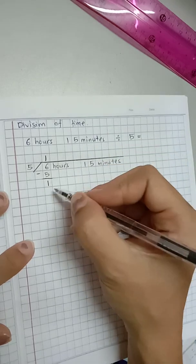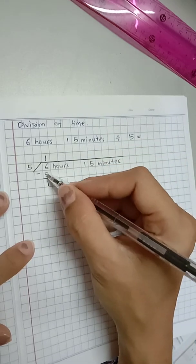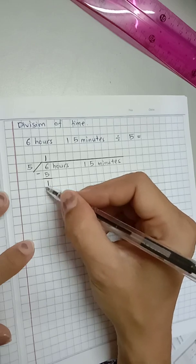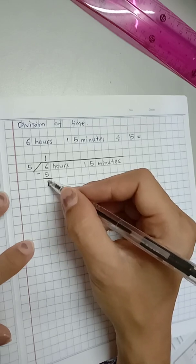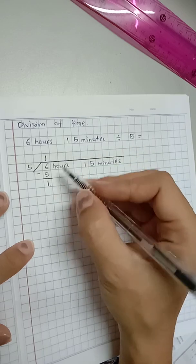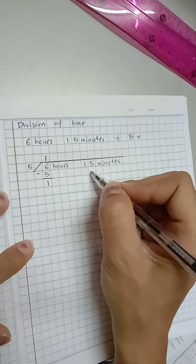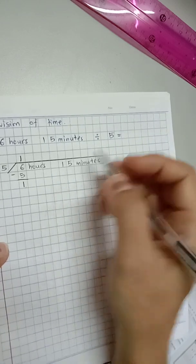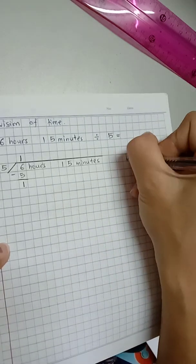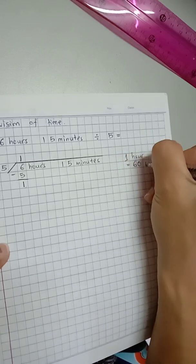So here, 1 hour is left. We cannot leave 1 hour here because we need to finish dividing all the numbers. So what we're going to do, we're going to take 1 hour and change it into minutes. Remember, you have learned 1 hour is 60 minutes.